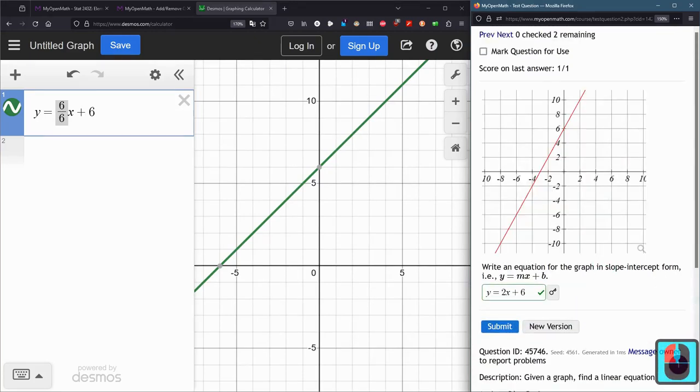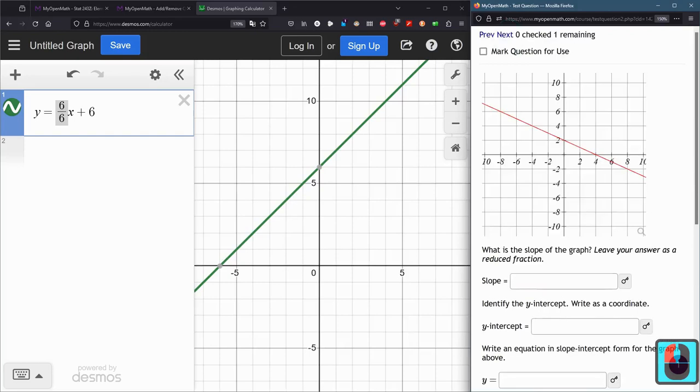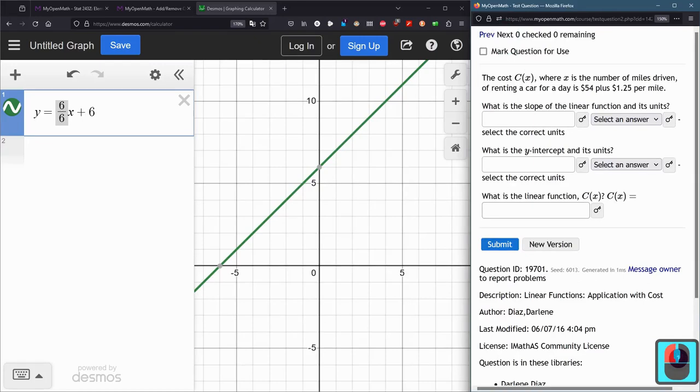Alright. Same thing here. Slope, y-intercept. And then again, this equation at the end. It already has the y equals. So, don't include that when you type.